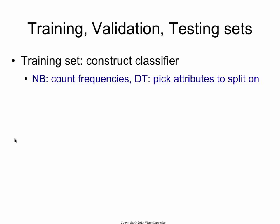Today we talked about three types of sets. When you're building a classifier or a regression system, you want three types of sets. You have your training set — this is what you're going to give to your classifier. It's going to look at the training set and make its estimates. Your decision tree is going to find the best attributes from that set; your naive Bayes is going to count word frequencies on the training set.